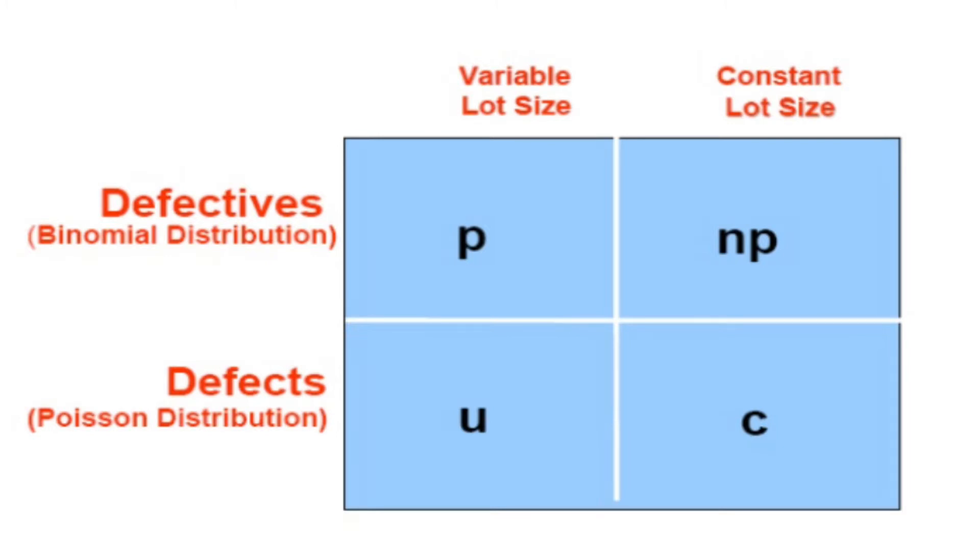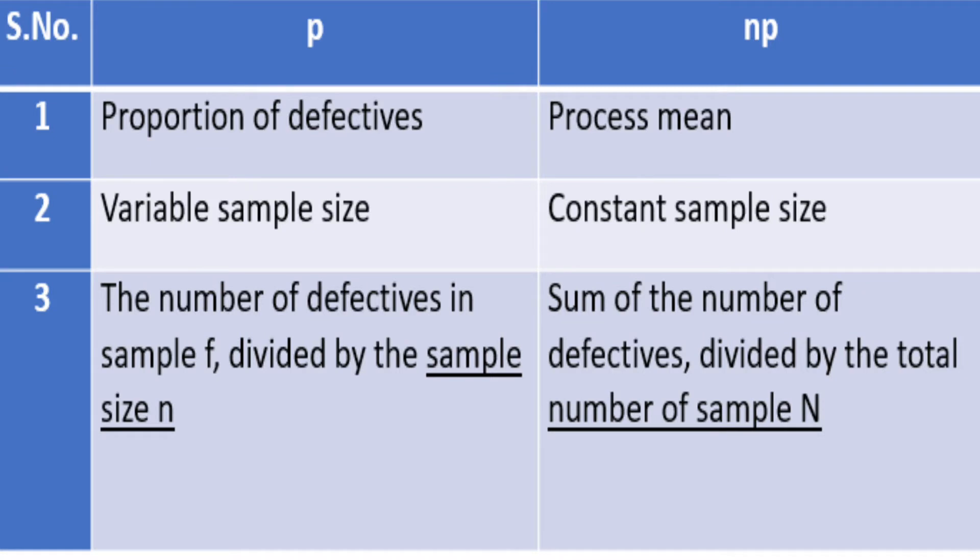When we talk about P chart, we are talking about proportion of defectives. When we talk about NP chart, we are talking about the process mean. In P chart, we have variable sample size, but in NP chart, constant sample size is being used.